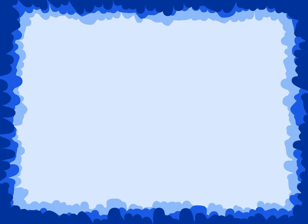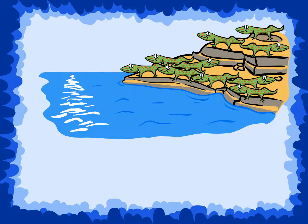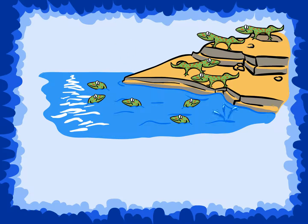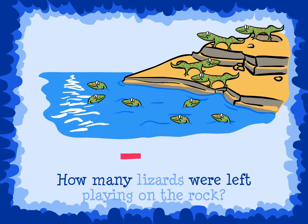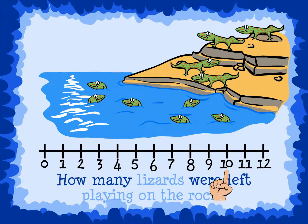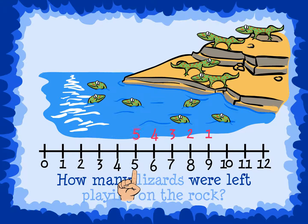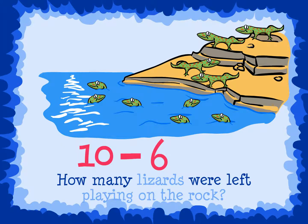Let's try another one. There were ten lizards playing on a rock. Six of the lizards decided to go for a swim. How many lizards were left playing on the rock? Step 1: We need to find out how many lizards were left. We need to subtract. Step 2: There were ten lizards, then six left. 10 minus 6. We can use a number line to help us solve this problem. Put your finger on the number 10 and count back 6: 1, 2, 3, 4, 5, 6. We ended on the 4, so this means that 10 minus 6 is equal to 4.